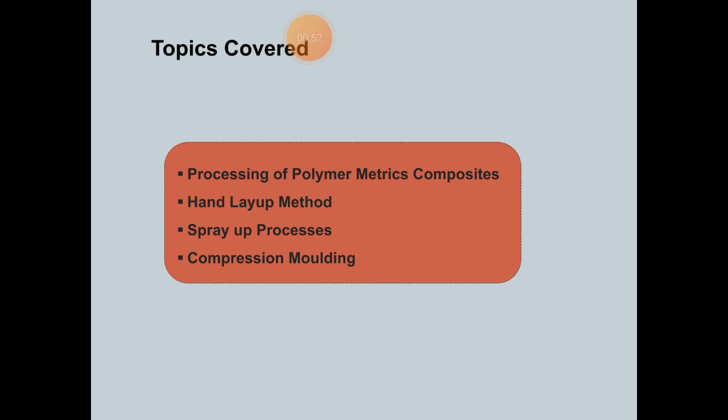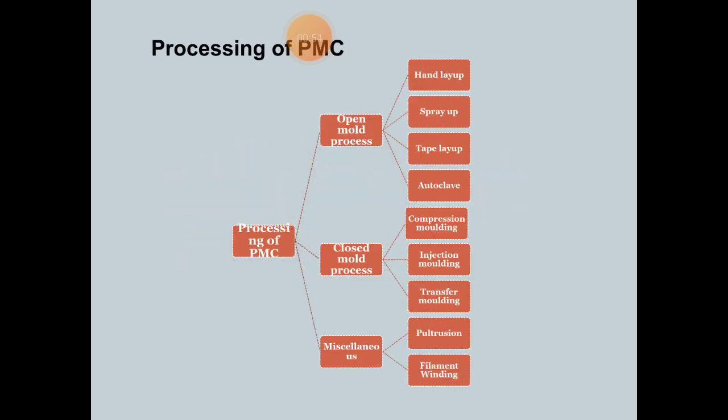Processing of PMC has three categories: open mold process, closed mold process, and miscellaneous processes. Open mold has four processes: hand layup, spray up, tap layup, and auto clay up. Closed mold process has three types: compression molding, injection molding, and transfer molding. Miscellaneous includes pultrusion and filament winding.